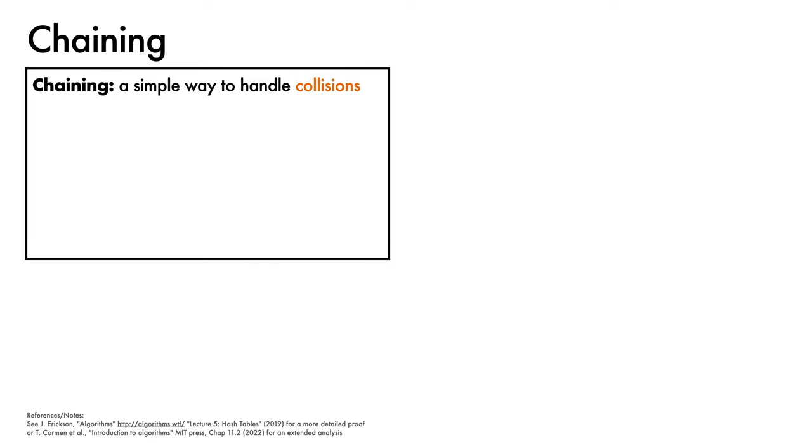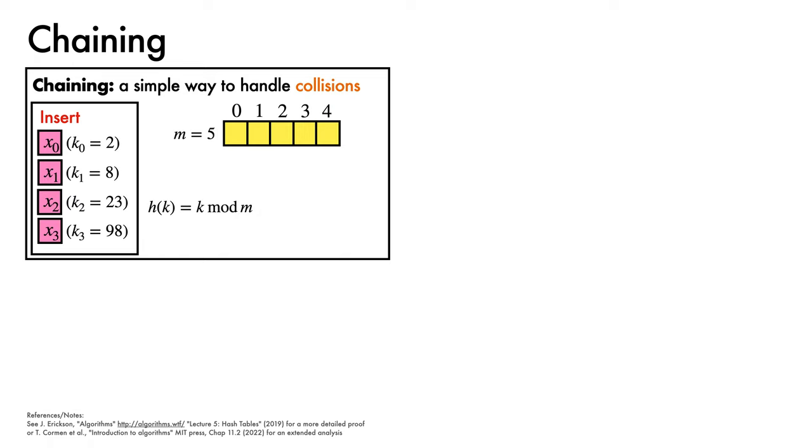We'll now turn to the topic of chaining, which provides one relatively simple way with which to handle hash collisions. Let's return to our example 5-slot hash table from before, with the same hash function, and let's make some insertions. x0 with key 2 maps to slot 2. x1 with key 8 maps to slot 3. x2 with key 23 also maps to slot 3, but finds it full due to a hash function collision. This is resolved by combining x2 and x1 in a data structure, typically a doubly linked list which allows for fast deletions.